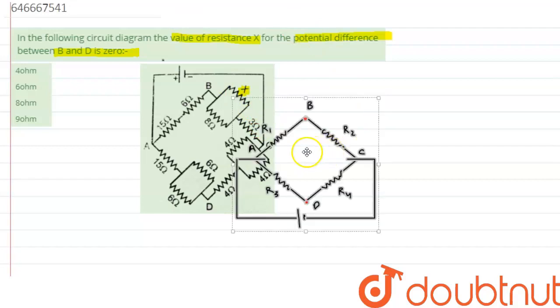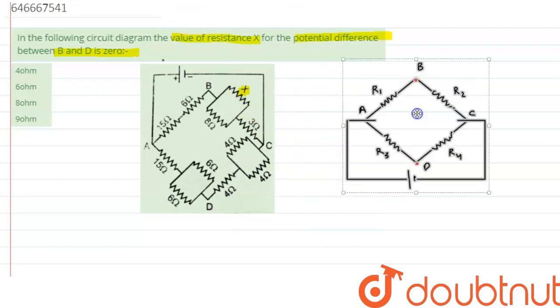This is the case of a Wheatstone network which is under the balance condition. So when the network is balanced, we can write R1 by R2, that is the ratio of two resistances, and this is R3 by R4 will be the same. So this is the balance condition, and balance condition occurs when potential of B and D is same, or we can say potential difference between B and D is zero.